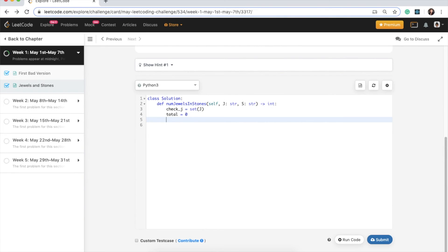So now we need to iterate over each item in our S string, so we can say for st in S. So each string in S, and we need to say if st in check_j, then all we need to do is increment our total, so total plus equals one. And that's it, and return our total, return total.